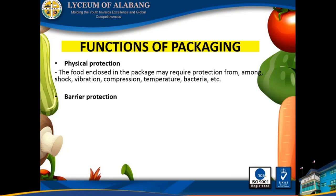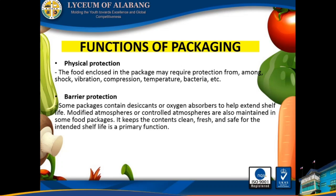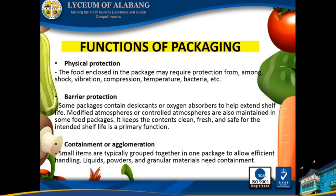Barrier protection. Some packages contain desiccants or oxygen absorbers to help extend shelf life. Modified atmosphere or controlled atmosphere are also maintained in some food packages. It keeps the contents clean, fresh, and safe for the intended shelf life, which is a primary function. Containment or agglomeration: small items are typically grouped together in one package to allow efficient handling. Liquids, powders, and granular materials need containment.